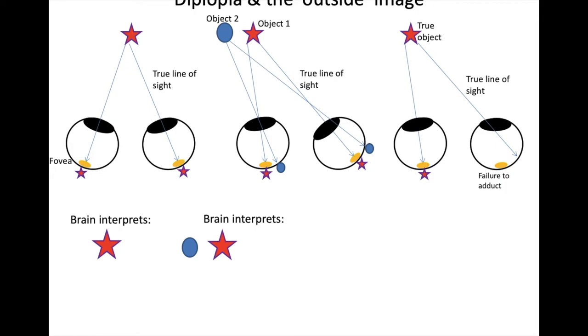Now the brain doesn't know that the eye hasn't moved. Instead, the brain interprets this light as having come from a second object, lateral to the true object. And hence, the patient sees two stars. You have the true image in the normal eye, and another false image, which is seen with the problem eye. This is your diplopia.